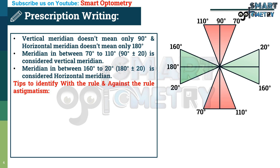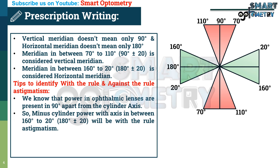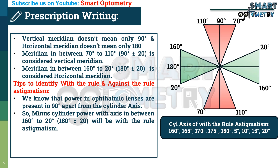Here are tips to identify with the rule and against the rule astigmatism. We know that power in ophthalmic lenses is present 90 degrees apart from the cylinder axis. So minus cylinder power with axis between 160 and 20 degrees — that is, 180 degrees plus or minus 20 — will be with the rule astigmatism. Because minus cylinder at 180 degrees means we are subtracting power from the 90 degree meridian. So minus power at 160, 165, 170, 175, 180, 5, 10, 15, or 20 degrees will be examples of with the rule astigmatism.